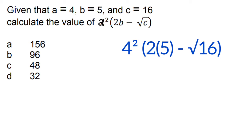Wherever you see a, you're going to put 4, b you put 5, and c you put 16. Go ahead now and perform the calculations. So 4 squared is 16, 2 times 5 is 10, and the square root of 16 is 4. So now we have 10 minus 4 in bracket, and you multiply this by 16, which is the same as 16 times 6, which gives us 96.